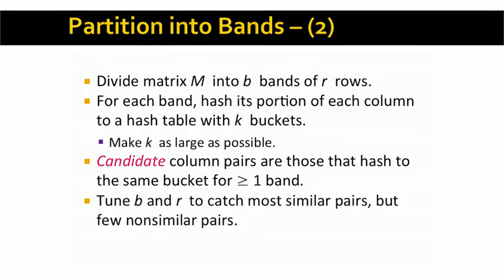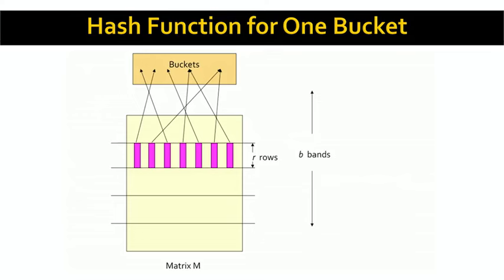Conversely, if we make B small and R large, it will be very hard for two signatures to hash to the same bucket for a given band, and there are few bands to give them that opportunity. Thus a small number of bands is best if we have a high threshold of similarity.